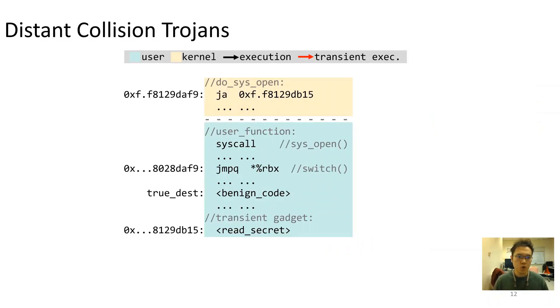Here, we show an abstract distant collision Trojan example. It starts inside of a benign user function, executing a system call which leads to a branch execution from the kernel space. Next, the execution continues and gets back to the user function and further reaches an indirect jump. Due to the matching index, tag, and offset, this indirect branch collides with the previous branch.